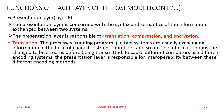Translation: the processes running on the two communicating computers usually exchange information in the form of characters, strings, numbers, and so on. The information must be changed to bit streams before being transmitted. Because different computers use different encoding systems, the Presentation layer is responsible for interoperability between these different encoding methods. The Presentation layer at the sender changes the information from its sender-dependent format into a common format, and at the receiving machine changes the common format into a receiver-dependent format.